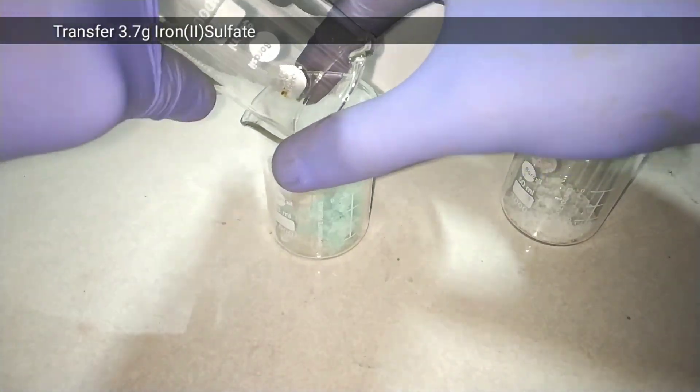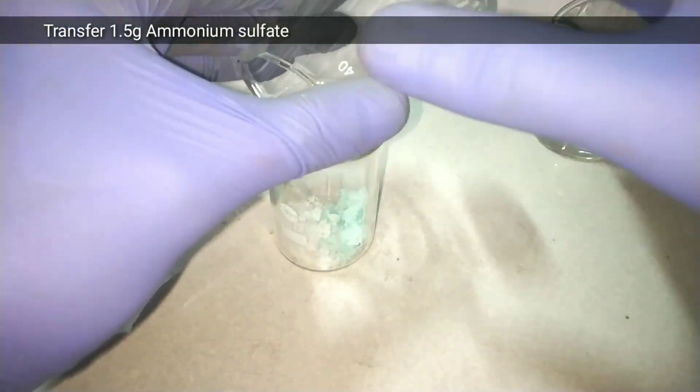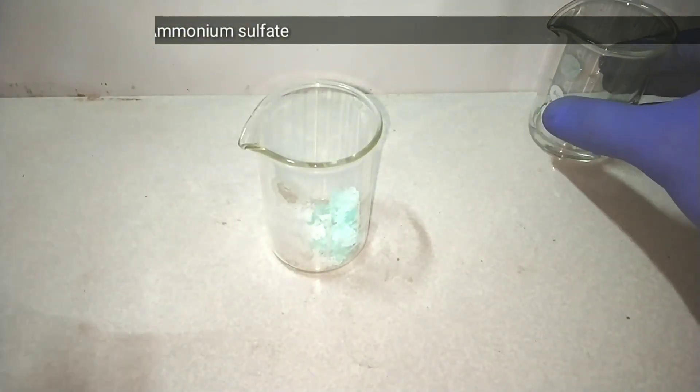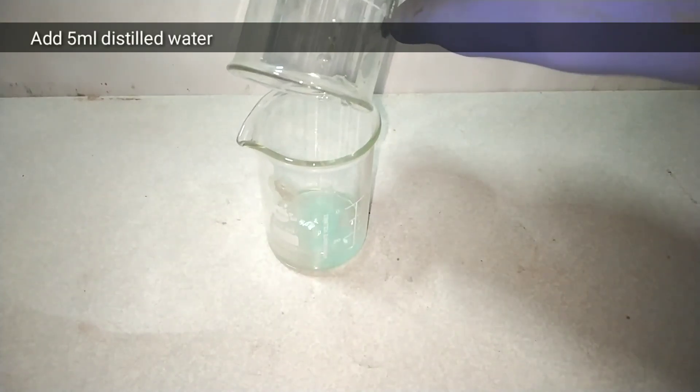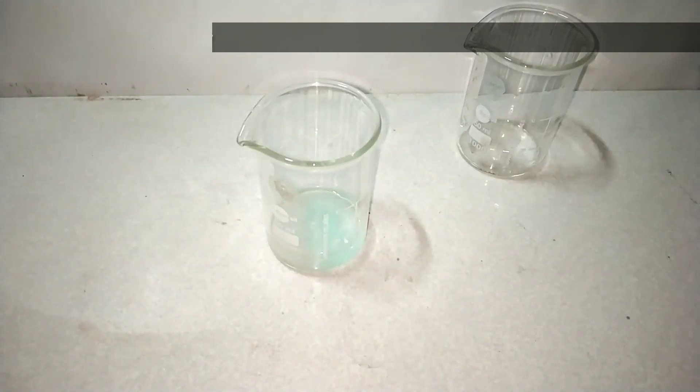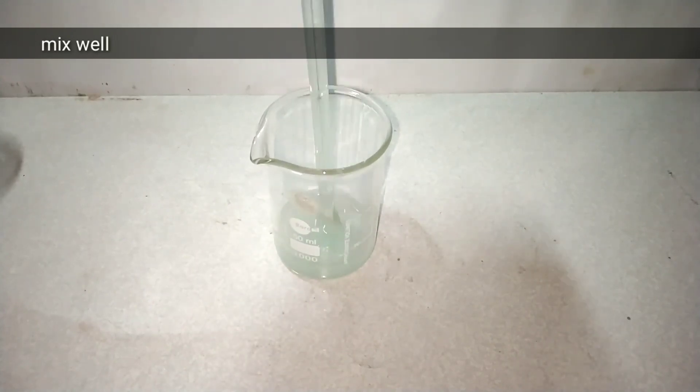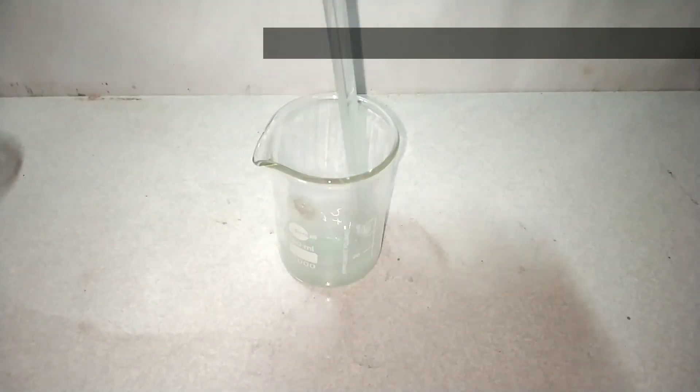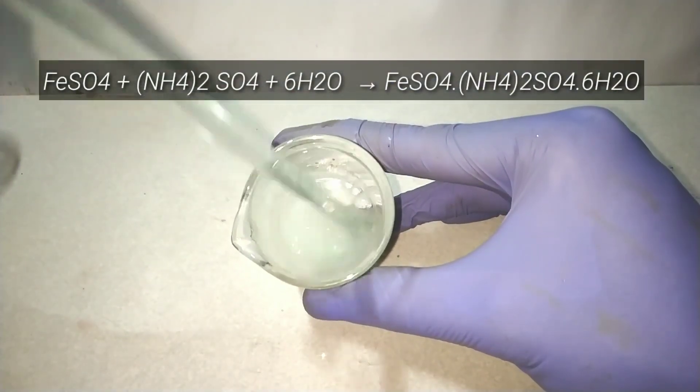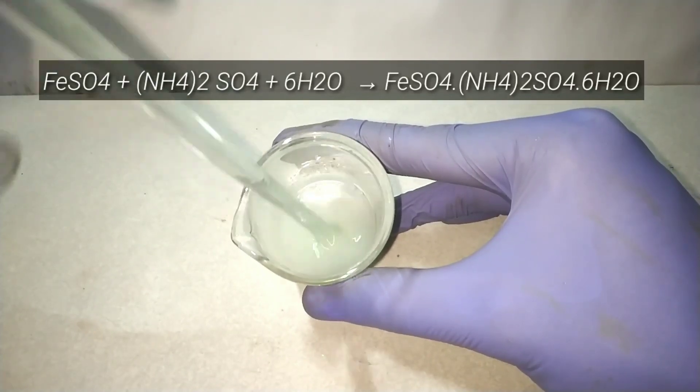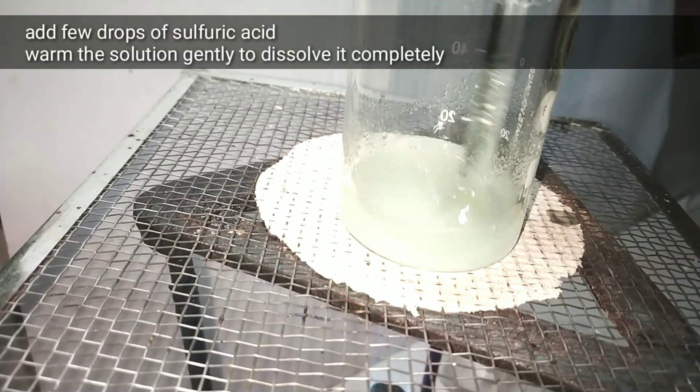First we transfer 3.7 grams of iron 2 sulfate into a 50 milliliter beaker. Now add 1.5 grams of ammonium sulfate into it. Then add 5 milliliters of distilled water and mix well to dissolve the contents. Warm the solution gently to dissolve the salt completely in the water.